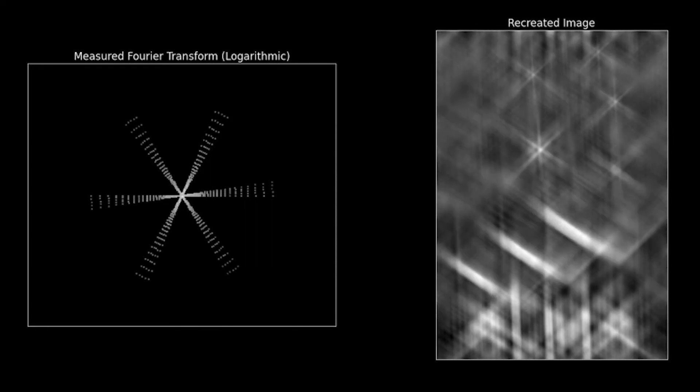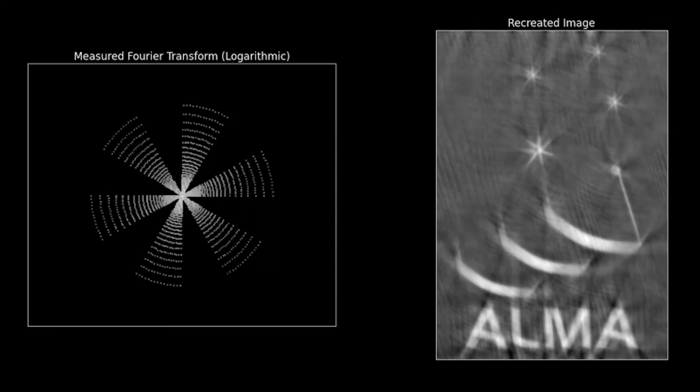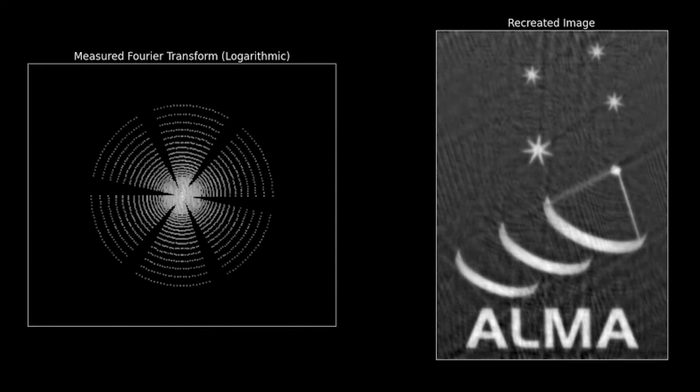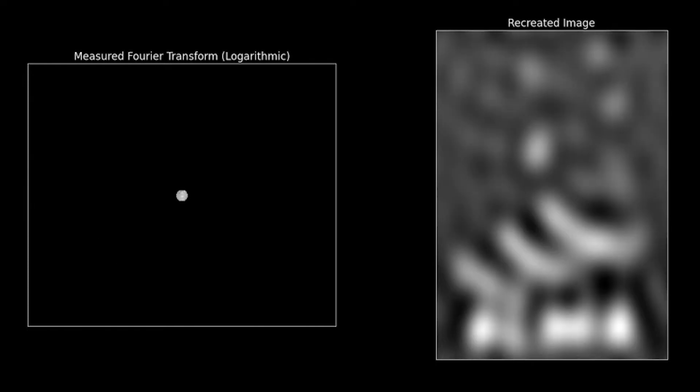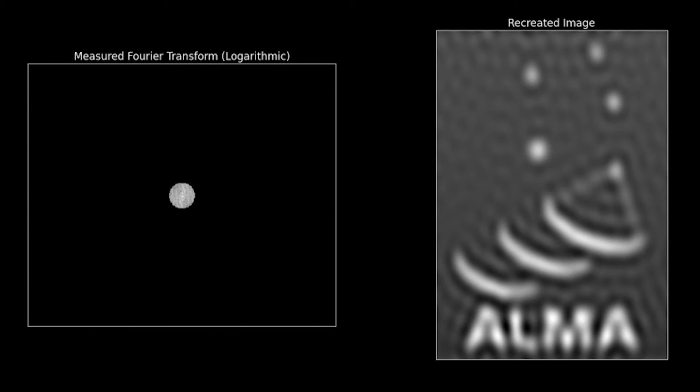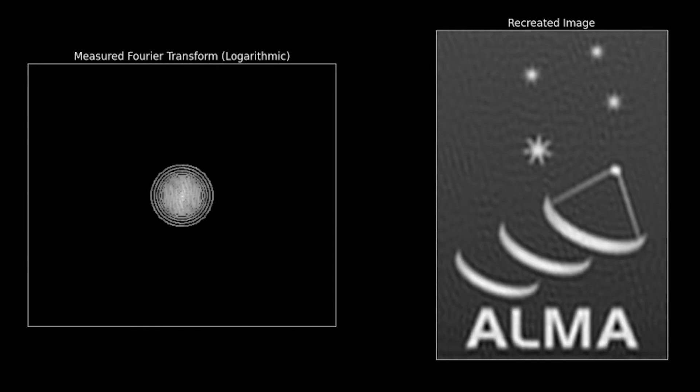In principle, the visibilities can simply be inverted using an inverse Fourier transform to recreate the sky image. The more visibilities there are, the better the coverage of the UV plane, and the better the Fourier transform will be able to represent the sky.